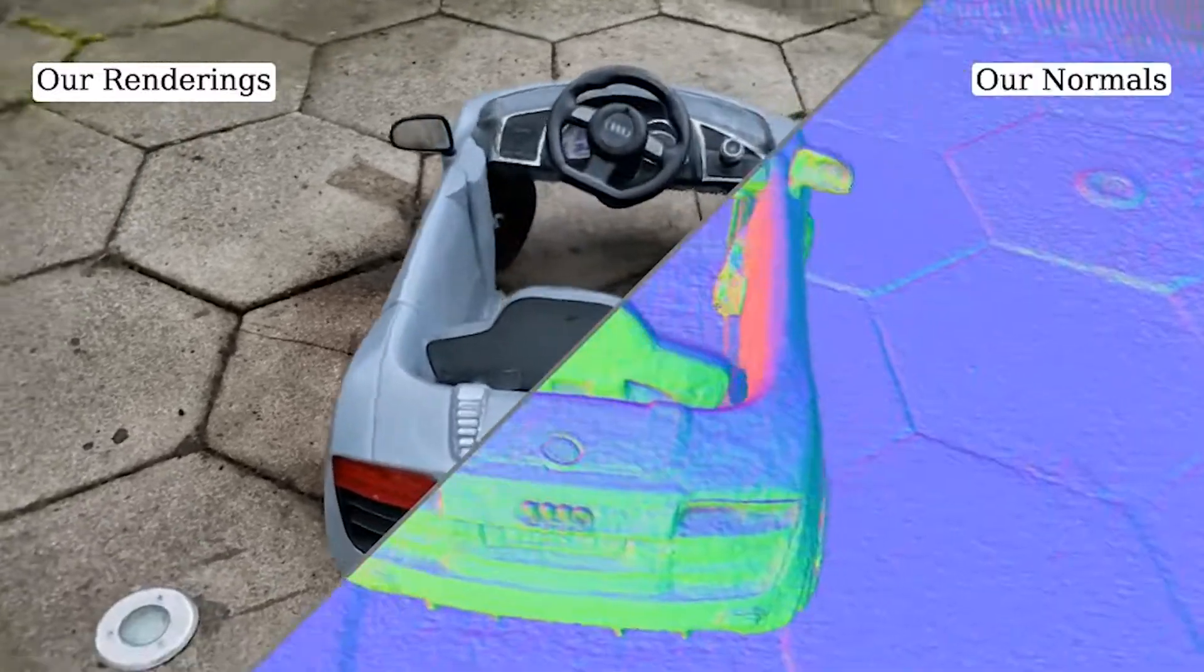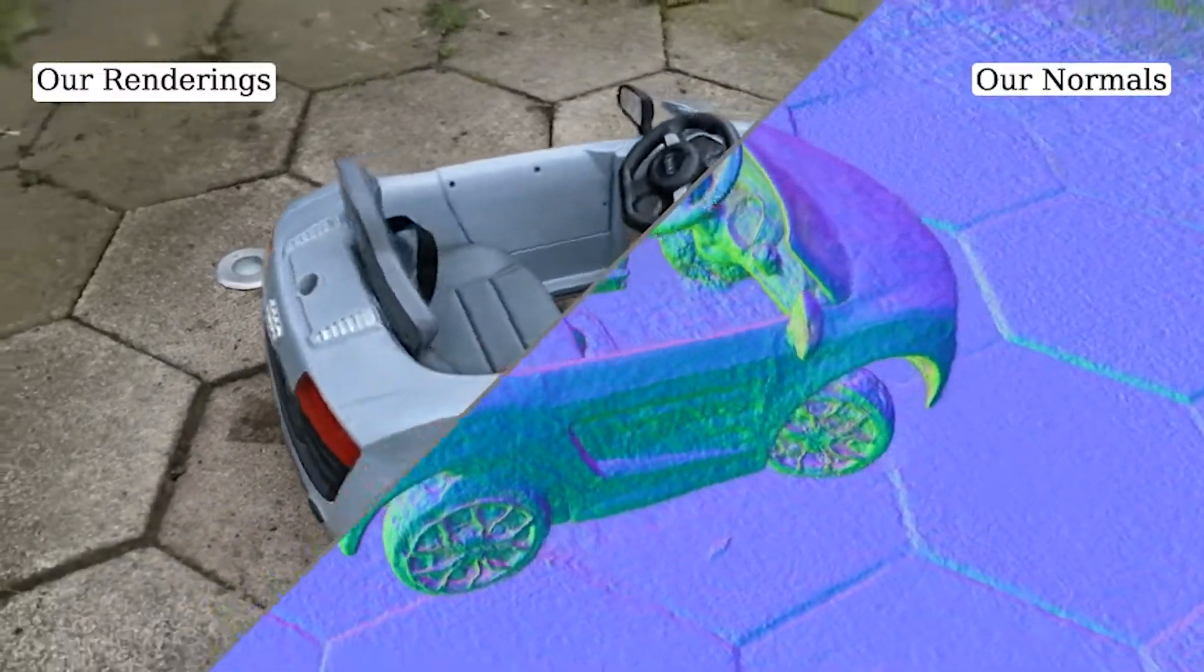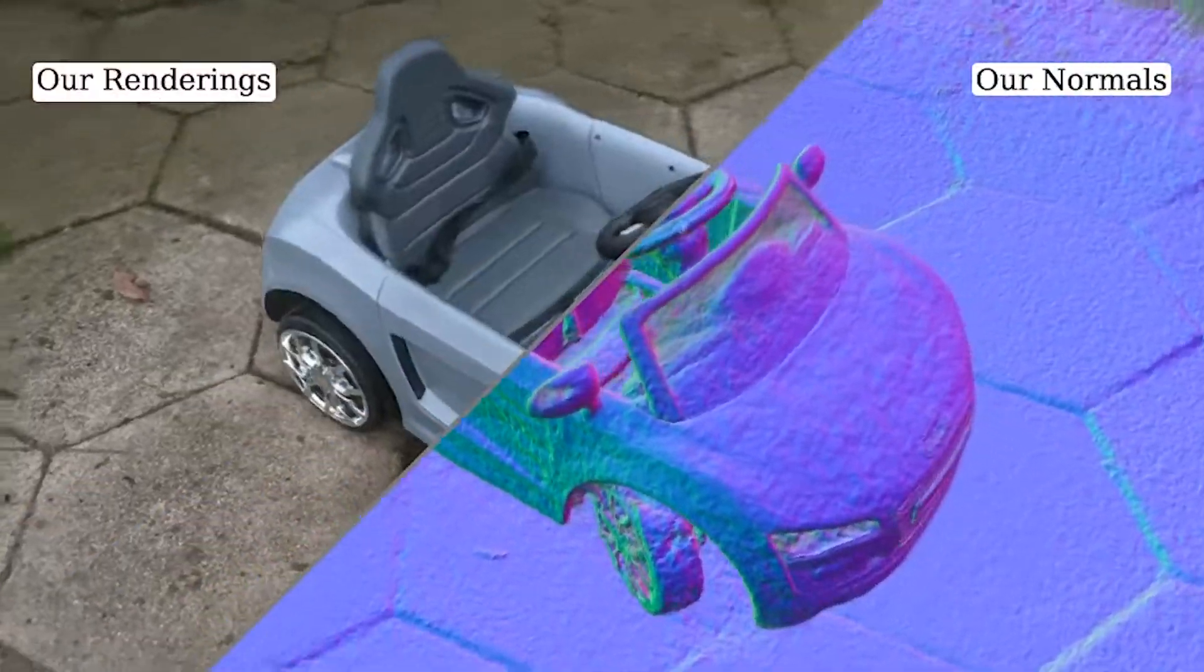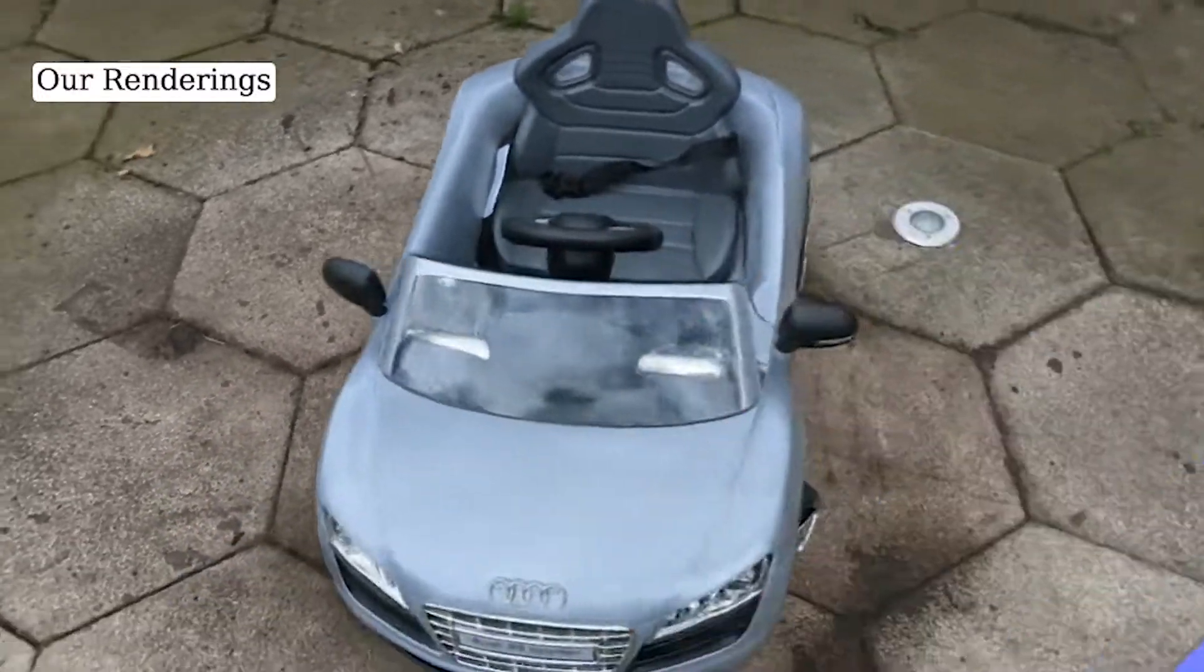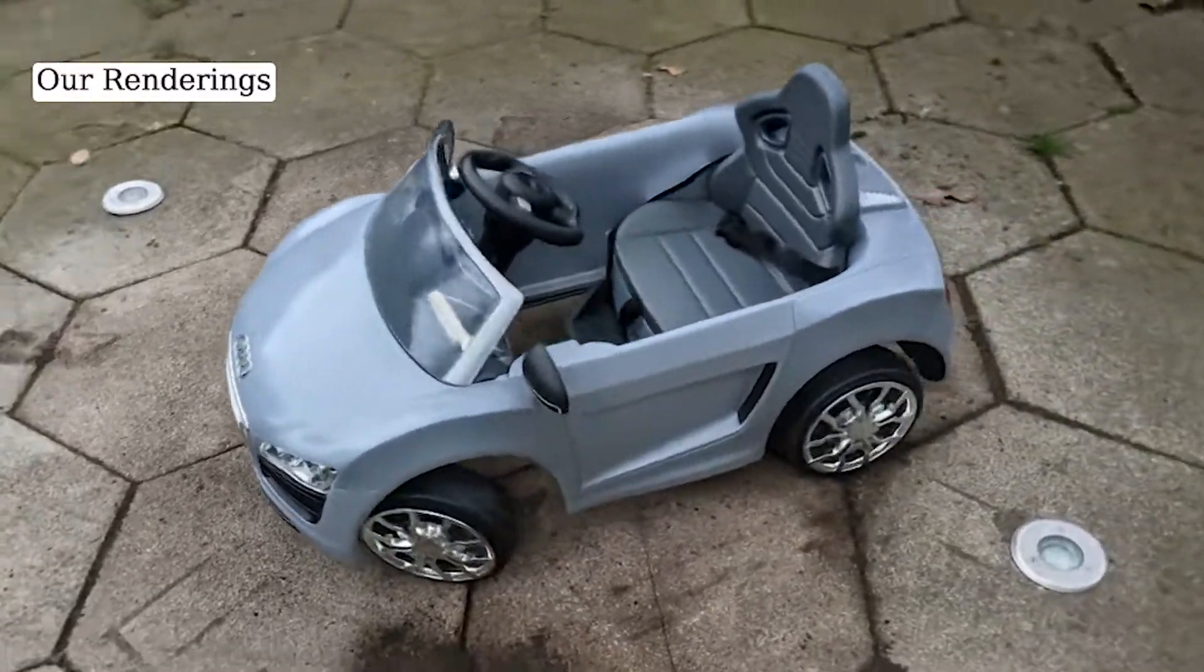In this example of a toy car, our model renders realistic reflections on the car's windshield. Furthermore, our method's extracted normal vectors accurately capture the underlying geometry.